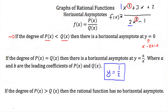If the degree of the numerator p(x) is greater than the degree of the denominator q(x), then the rational function has no horizontal asymptote. For example, x³ / (x² + 1) has numerator degree 3 and denominator degree 2. Since 3 > 2, this rational function has no horizontal asymptote.